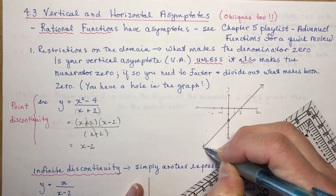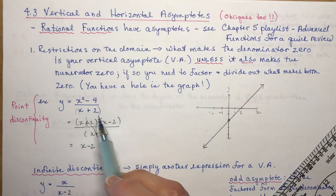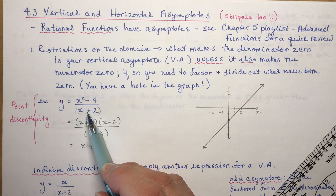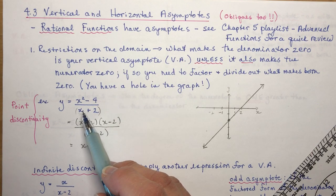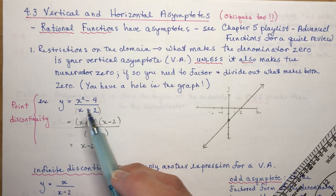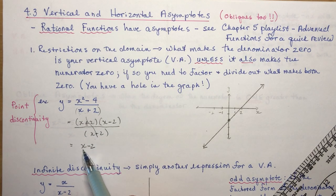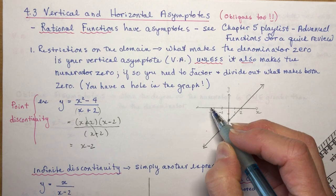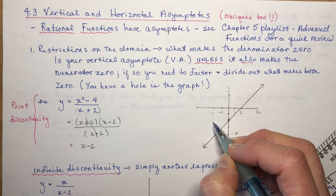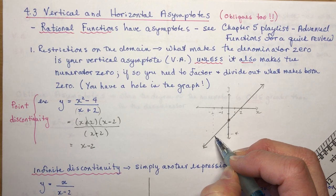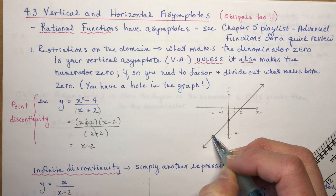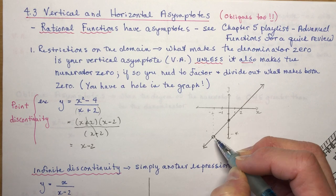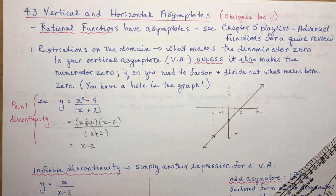This would be incorrect if left as a complete line, because you have a restriction on the domain: x cannot be minus 2. When x is minus 2, minus 2 minus 2 gives minus 4. So at the point (−2, −4) you should have a hole in the graph. That's a point discontinuity.